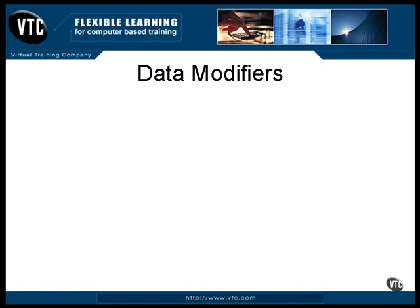When you declare a data item, you can also apply modifiers to that declaration that specifies something further about the declaration. These modifiers don't make any sense when used inside a method because the variables appear and disappear as the method is called. These are the modifiers that can be applied to any data items, including arrays, that are declared outside of any method.